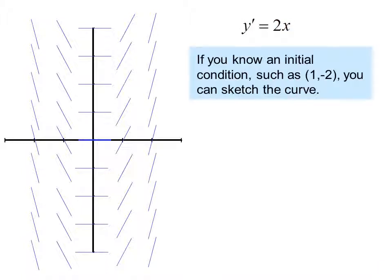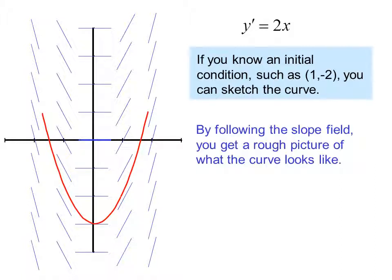If you know an initial condition, such as 1, negative 2, you can sketch the curve. So I look for the point 1, negative 2, which is right there. And I follow the line segments in both directions to draw the curve. By following the slope field, you get a rough picture of what the curve looks like. In this case, it is a parabola.